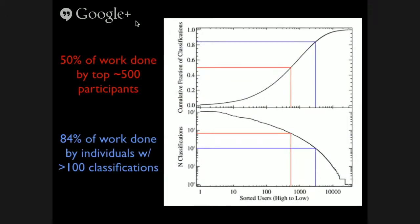About half of the classifications came from the top 500 participants. I've sorted users with top users on the left and lower users on the right. This curve shows classifications per user and the cumulative fraction of all classifications. Half are coming from people who did a few hundred — five or six hundred — classifications. Interestingly, we had 85% of the work done by people doing 100 classifications or more. I thought there would be a higher percentage from casual users doing 10 or 20 classifications. We actually had a decently high level of engagement. One clarification: a classification here means viewing one image and identifying all sources in that image, per submission.